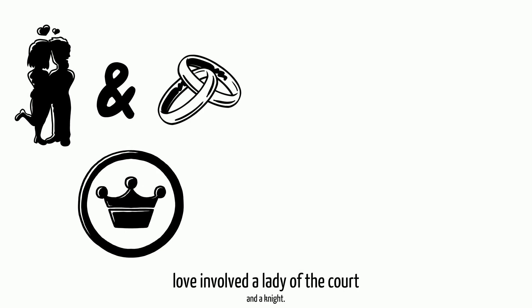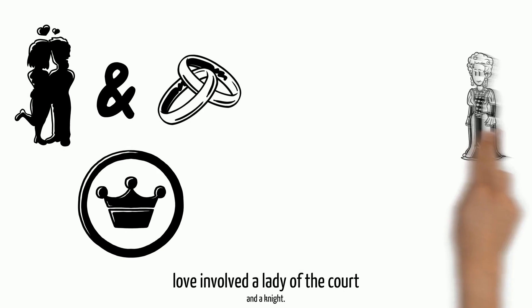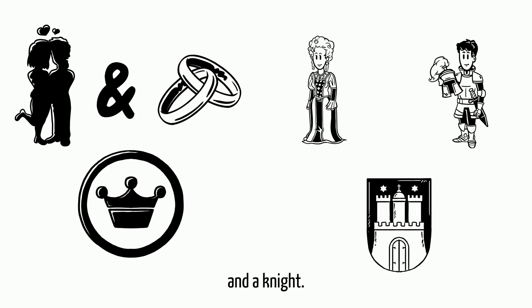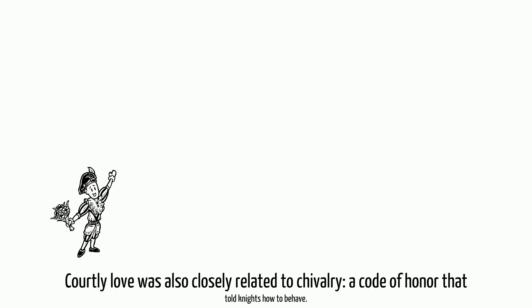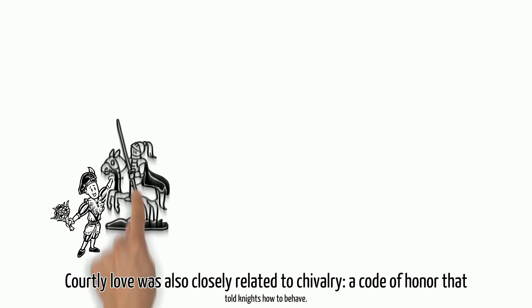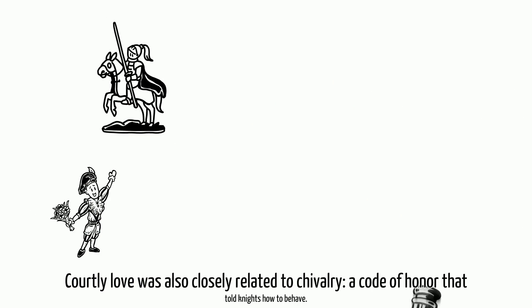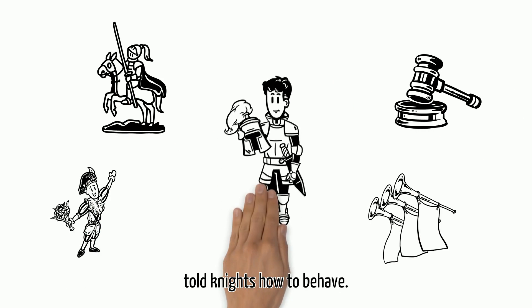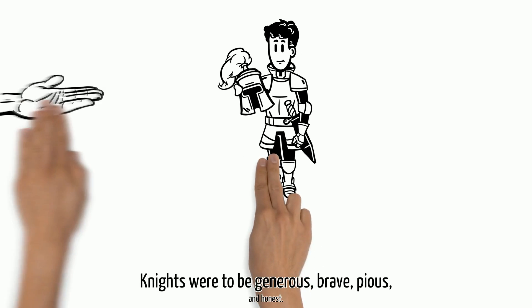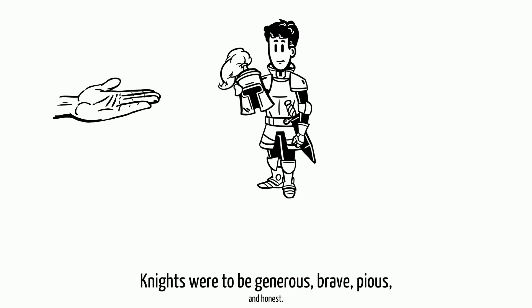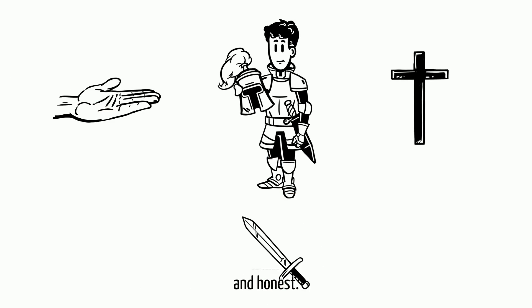Most often, courtly love involved a lady of the court and a knight. Courtly love was also closely related to chivalry, a code of honor that told knights how to behave. Knights were to be generous, brave, pious, and honest.